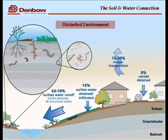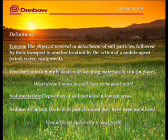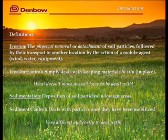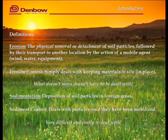In the disturbed environment — an area developed to put houses in — that top layer is not there and not developed. What happens is we get a lot of surface runoff and very little transpiration, very little control or holding of moisture. The result is erosion and then sedimentation, which is the depositing of sediment. When we talk about erosion and sediment control, it's very important to look at those two terms and separate them out.